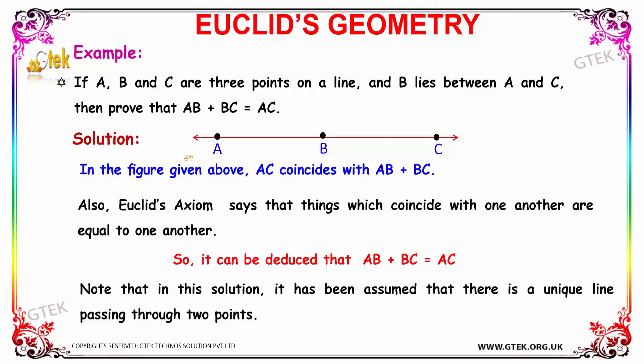Let's go to the solution. As per the question, we have a line with three points by keeping B between A and C. In the figure given above, AC coincides with AB plus BC.